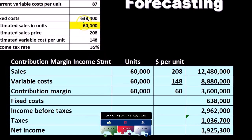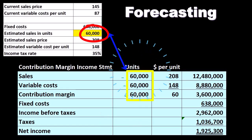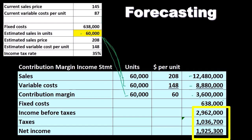For example, if we change the units to 60,000, the sales, variable costs, and contribution margin all update automatically. In an Excel worksheet, these items pull from that one cell, so it happens automatically. 60,000 times $208, 60,000 times $148, 60,000 times $60 — giving us a contribution margin of $3,600,000 minus the same fixed costs (those didn't change, they're fixed), giving us our income before taxes. Then we calculate taxes and subtract to get net income. Similarly, changing to 35,000 units changes just that one item and everything pulls through automatically to give us our bottom line.